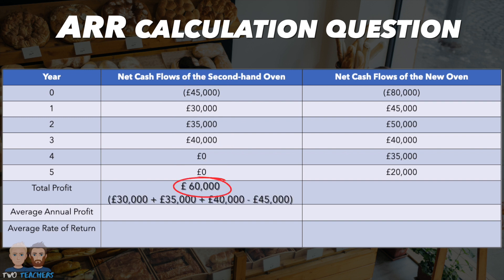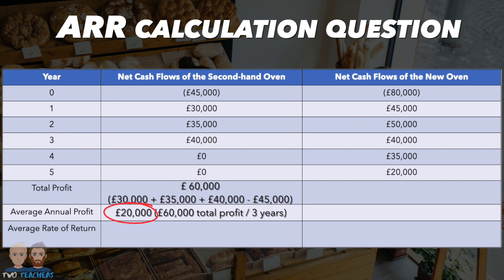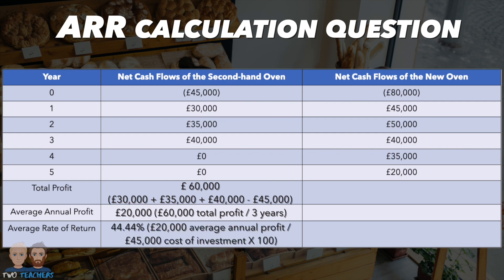Now, you can use this £60,000 total profit figure and divide it by the three years it was generated over, giving the bakery an average annual profit of £20,000. This figure then needs to be divided by the £45,000 cost of investment and multiplied by 100, meaning that the ARR for the second-hand oven is 44.44%.